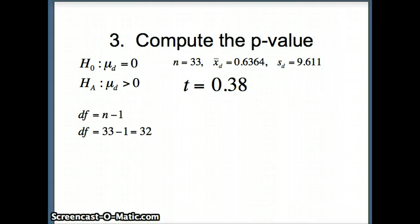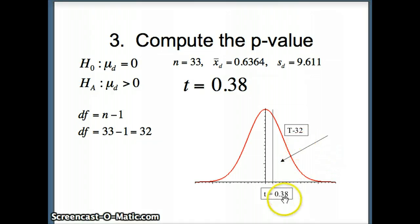So again, there's our information. We need our degrees of freedom. Degrees of freedom are n minus 1, n is 33, 33 minus 1 is 32. So we have a t distribution with 32 degrees of freedom. And the test statistic is 0.38. I'm going to shade everything to the right. Remember, 0 is the middle of the distribution, so I'm exaggerating 0.38's position. It's actually much closer to 0. But this area is what we're looking for.